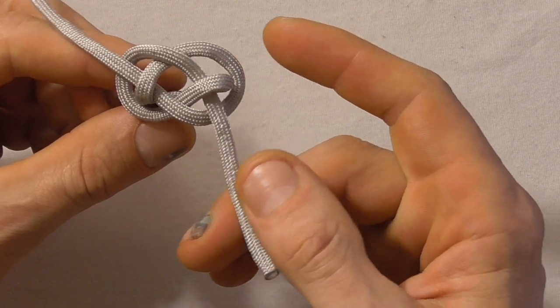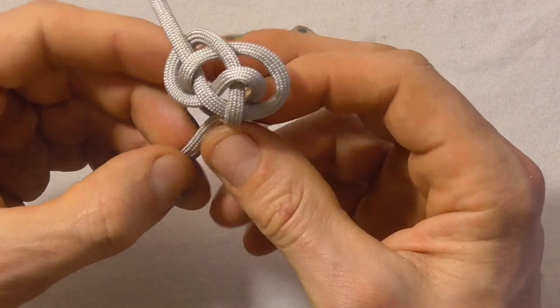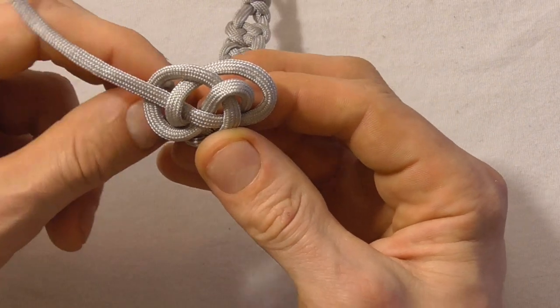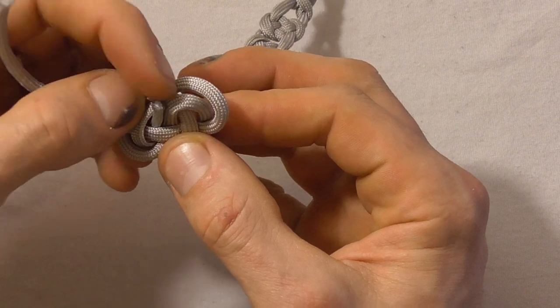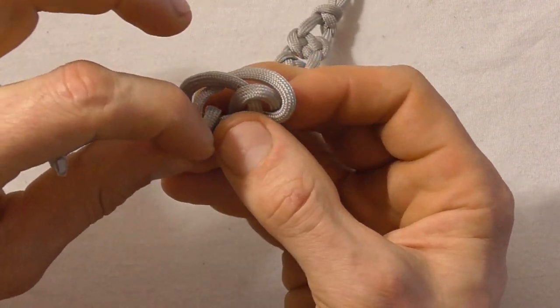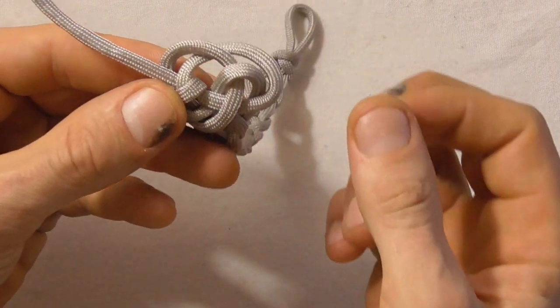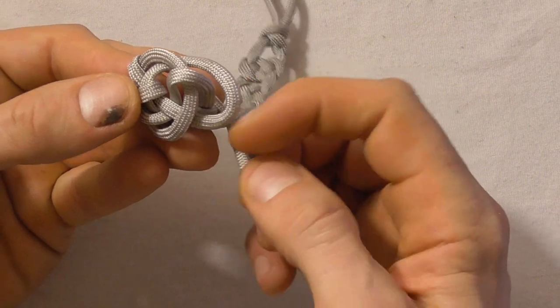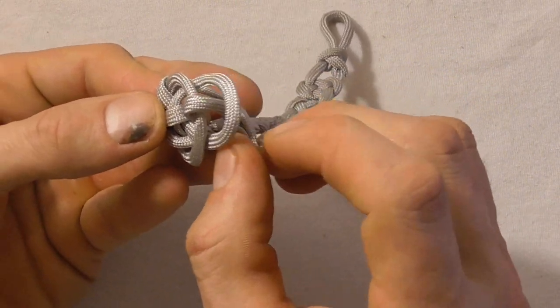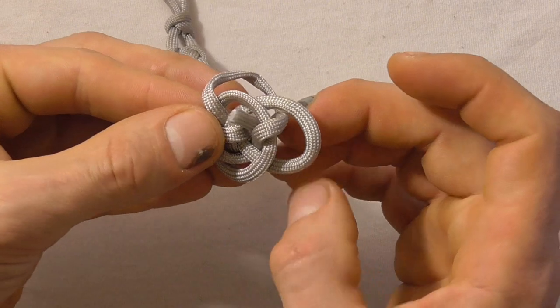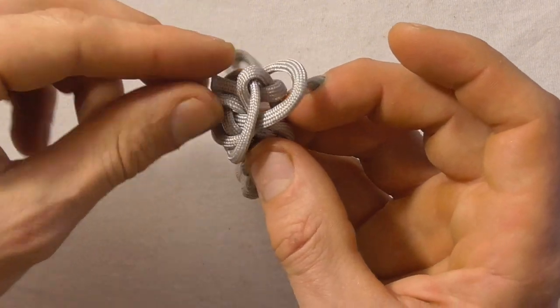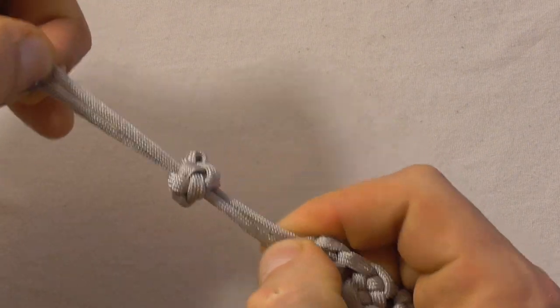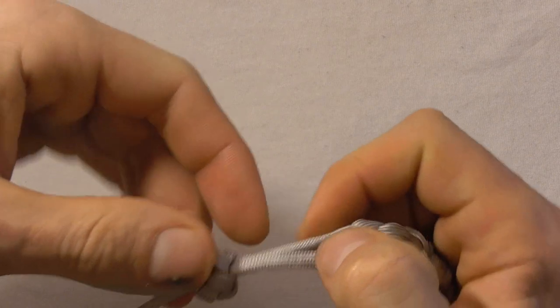And then with our right hand strand we just want to come around the whole knot and then up through that center. And we can grab those two ends and these two strands down here and just give that a pull. And that's our diamond knot.